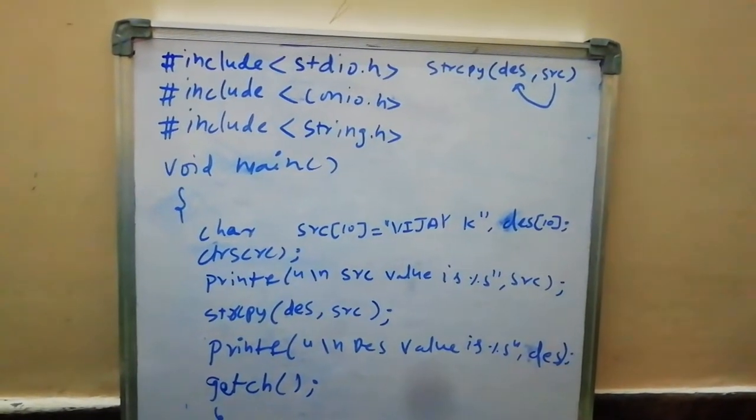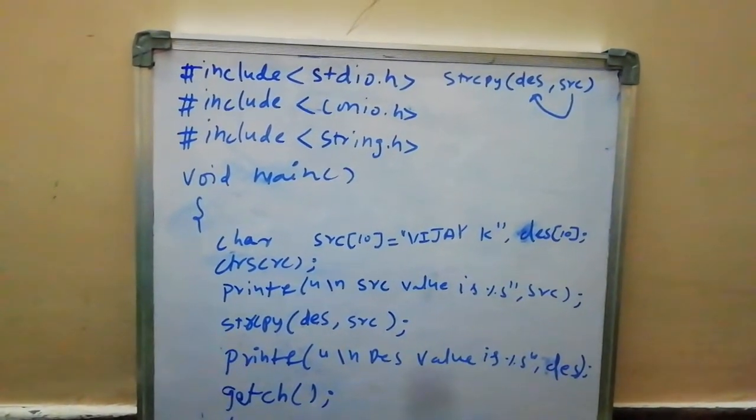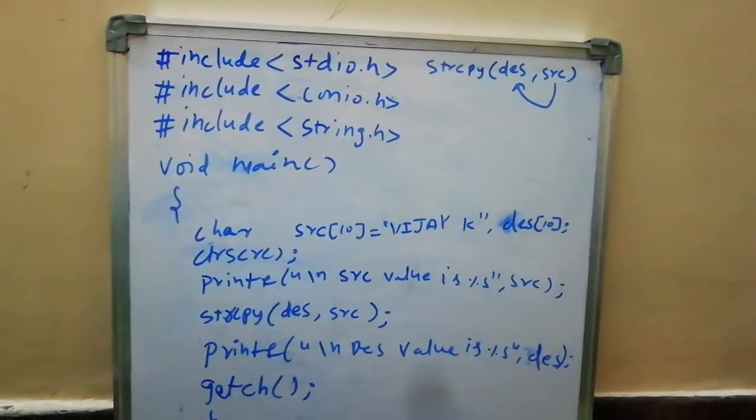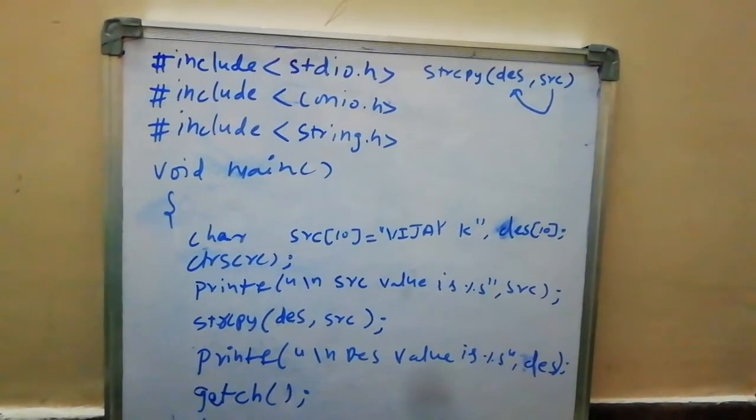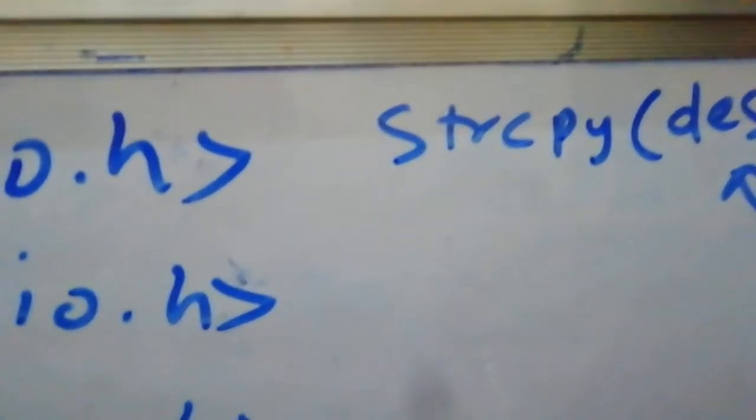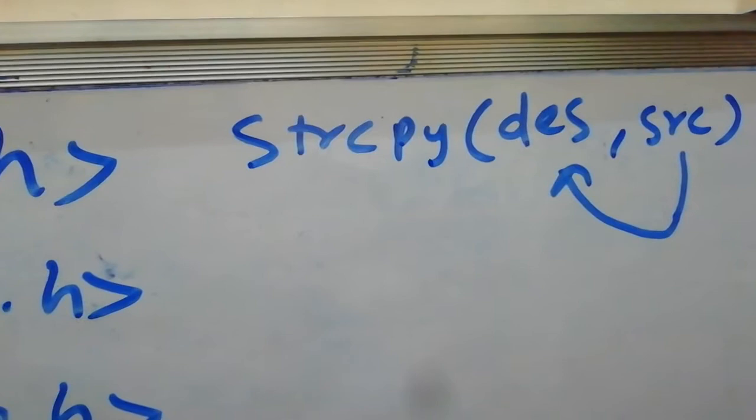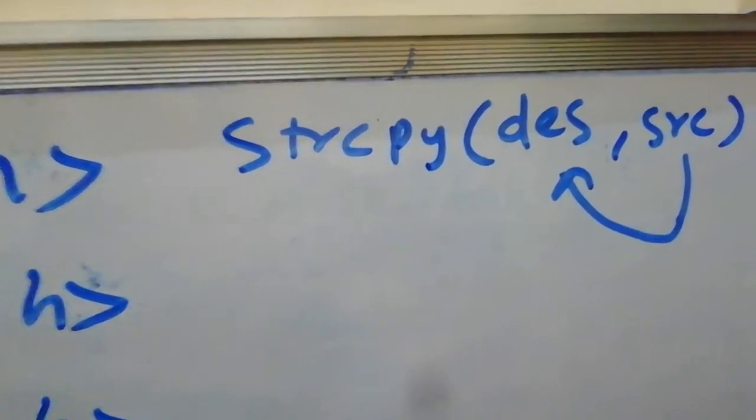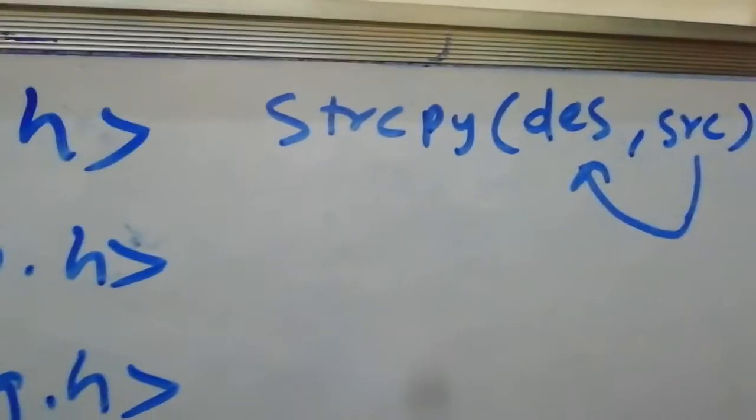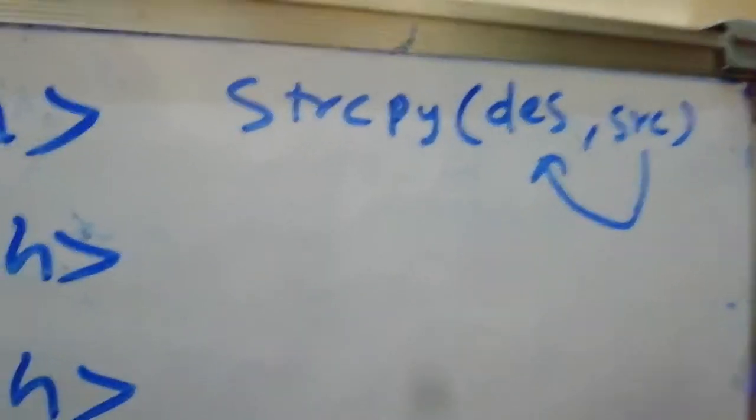Hi, today we will discuss the string copy function in C programming language. For that, we have to use the strcpy function. What it does is it copies using two parameters in the function - first parameter and second parameter.